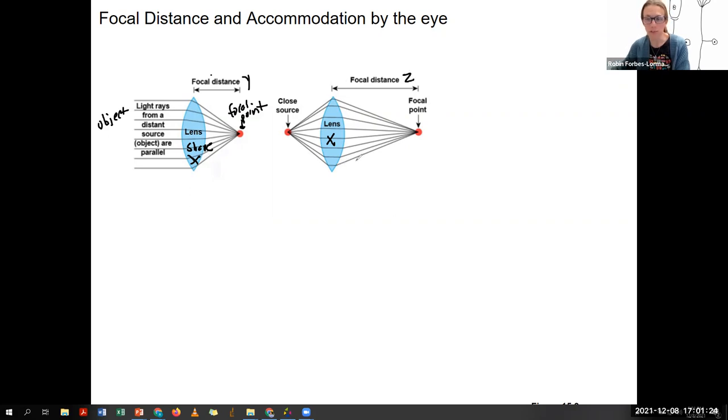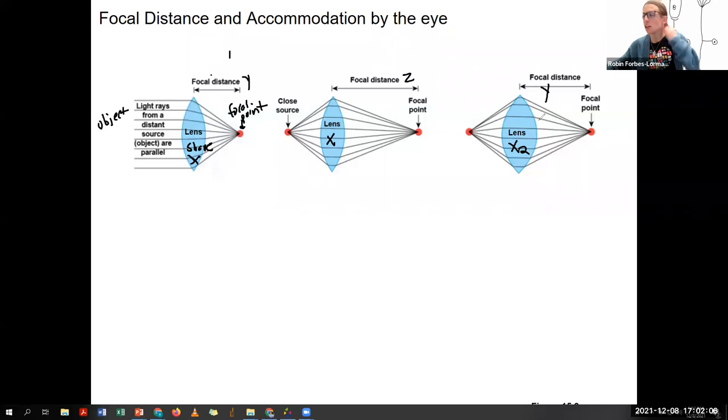And if that was our eye, we wouldn't be able to see that image very well because it's behind our retina. So what happens is our lens changes shape or accommodates. In this case, it fattens, becomes more rounded. So lens shape is now X2. The point is the lens is becoming rounded to shorten the focal distance. So the lens changes shape to refract light at a certain focal point. That's the basic idea.